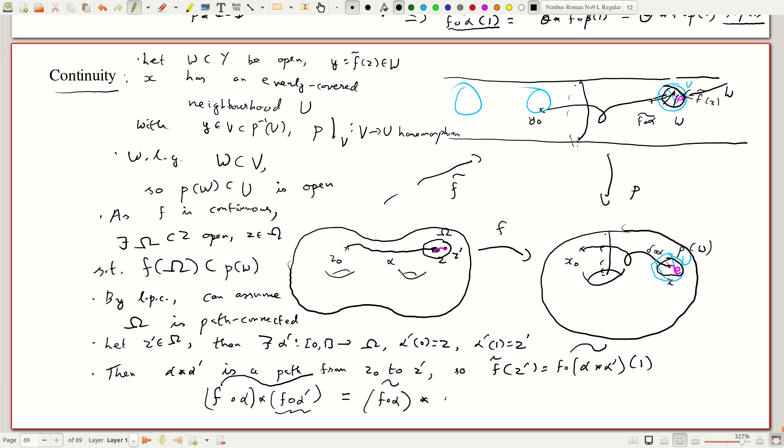But that we know by construction we can take p restricted to the evenly covered neighborhood v inverse composed with f composed with alpha prime.